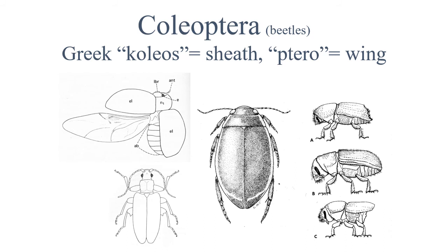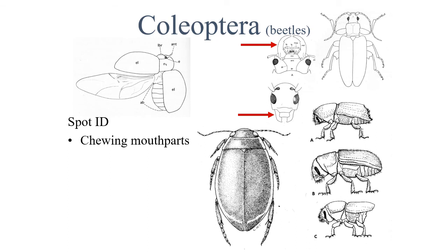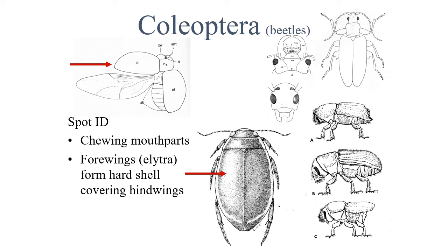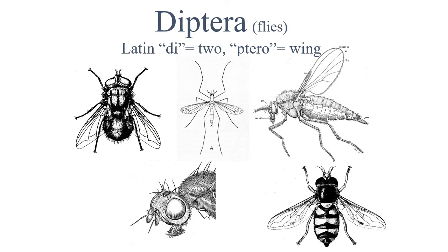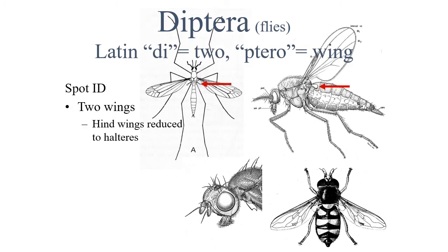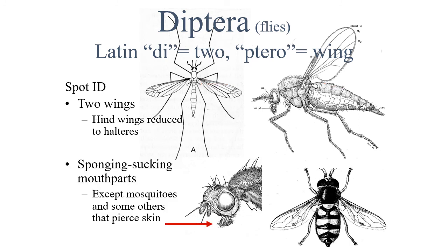The Coleoptera are the beetles, which get their name from the Greek for sheath and wing, meaning that their hind wings are hidden beneath the elytra, or modified forewing. Beetles have chewing mouth parts that they use to grind up food, and their forewings form a hard shell that covers the hind wings. Flies get their name from the words two and wing, referring to the fact that they only have two wings whereas most insects have four. This single pair of wings means the hind wings have been reduced into a structure called the haltere. They have sponging and sucking mouth parts, except mosquitoes and some others that are able to pierce our skin.